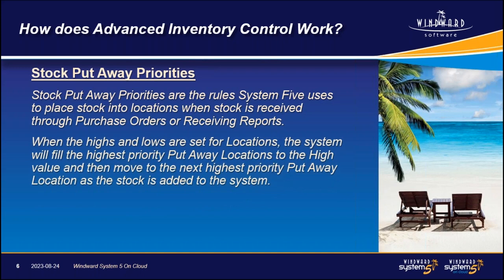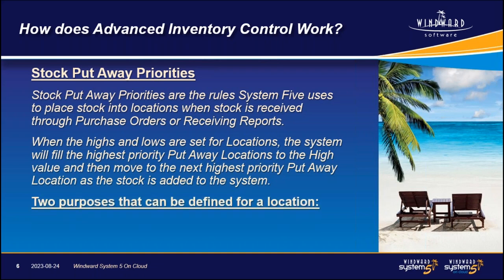Stock put away priorities are the rules System 5 uses to place stock into locations when stock is received through purchase orders or receiving reports. These priorities follow the same pattern as picking priorities but are typically used in the reverse order to help with stock retention. When highs and lows are set for locations, the system will fill the highest priority put away locations to the high value and then move to the next highest priority put away location as stock is added. There are also two purposes that can be defined for a location: the fixed purpose, which is a fixed physical location, and the random purpose, also a fixed physical location that can be used to store a variety of stock temporarily — typically used for holding stock already committed to customers, customer orders, or department transfers.